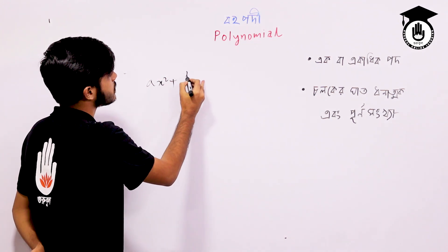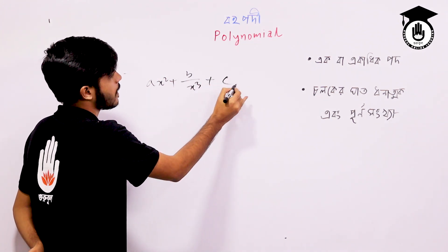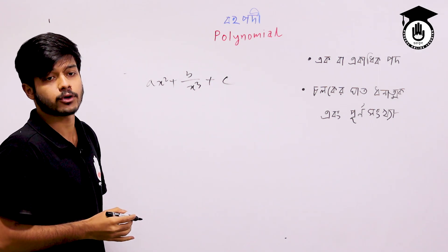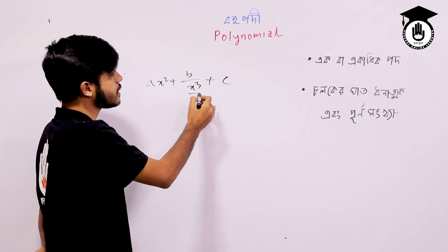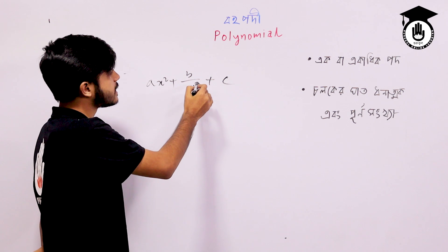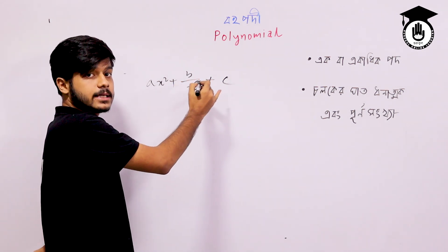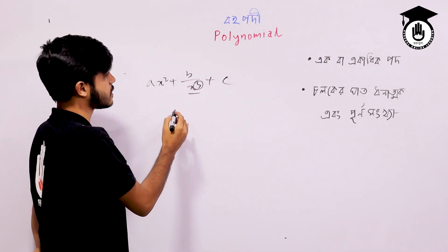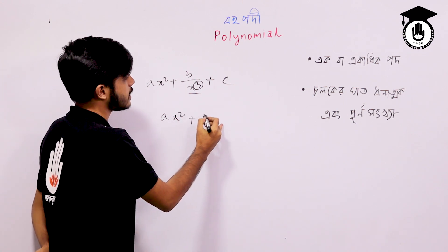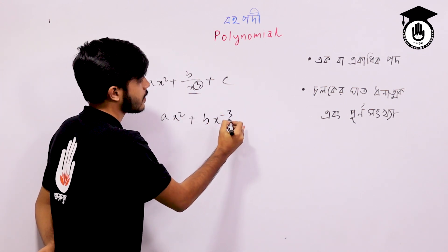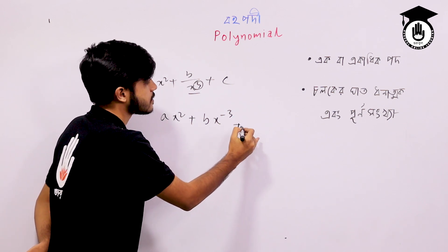A x squared plus b by x cube plus c. This is what we have to say about it. It's not about it, because this is the first one. This one is the first one, this one is the second one. I will write this one: x to the power minus 3 plus c.